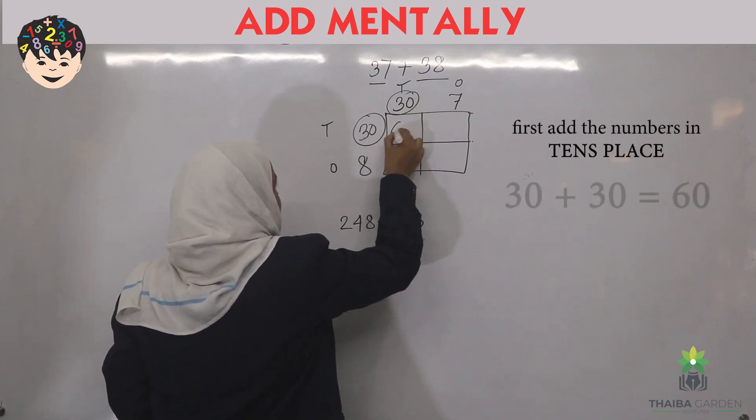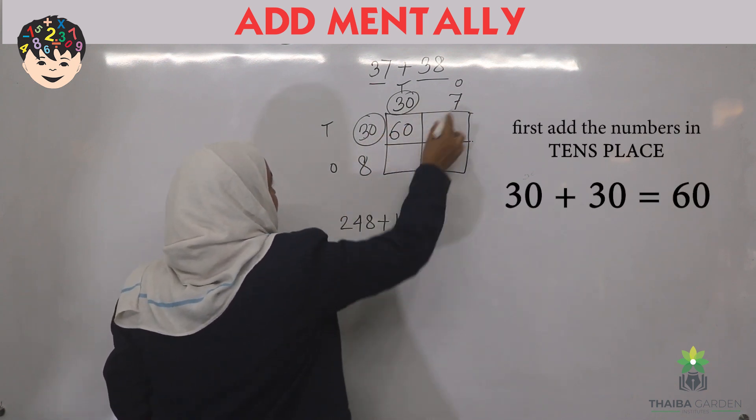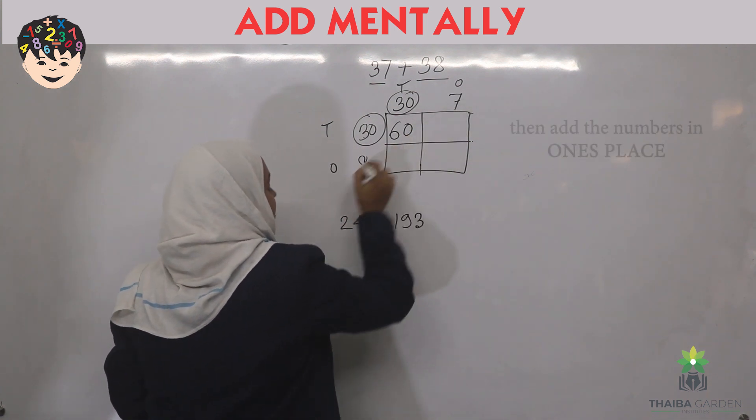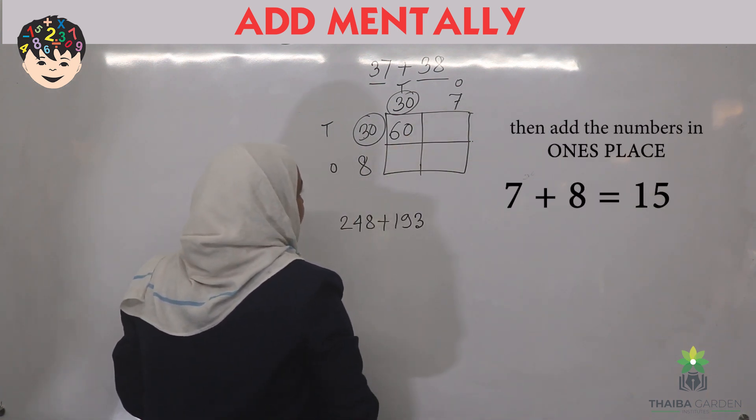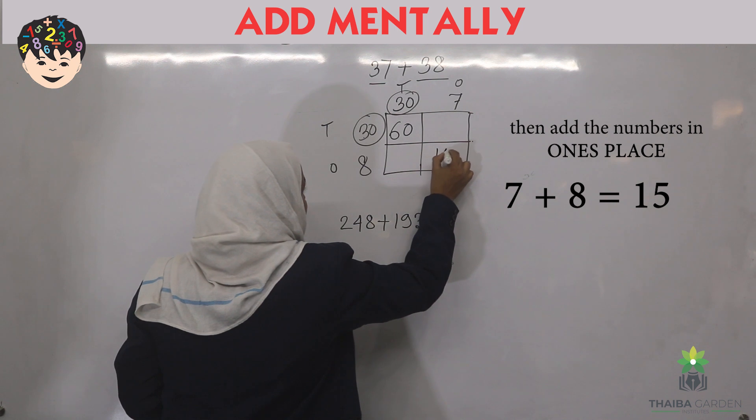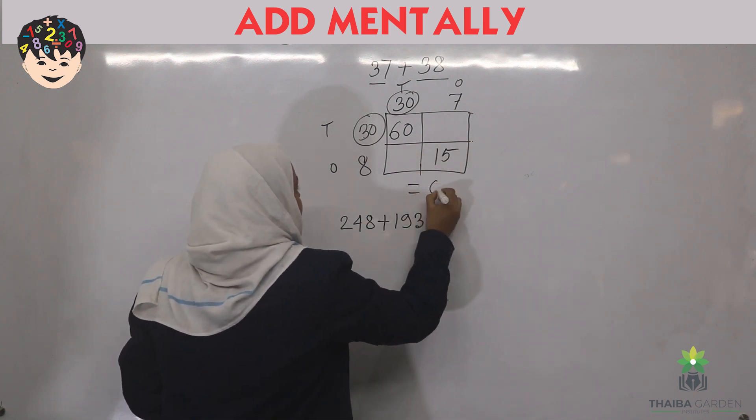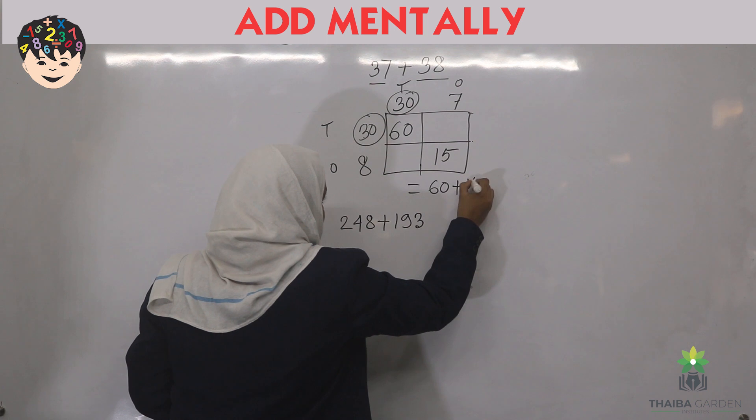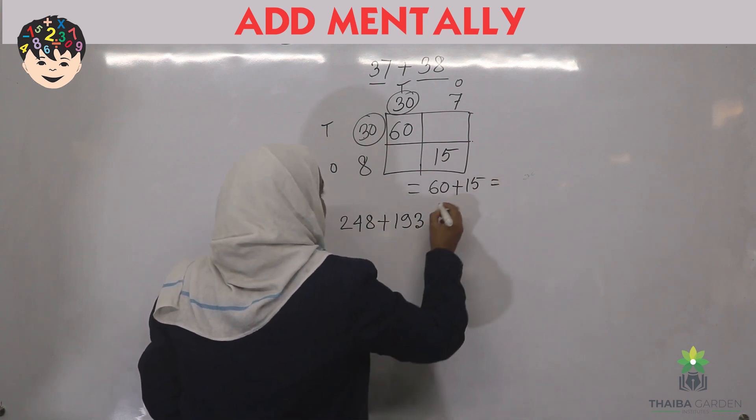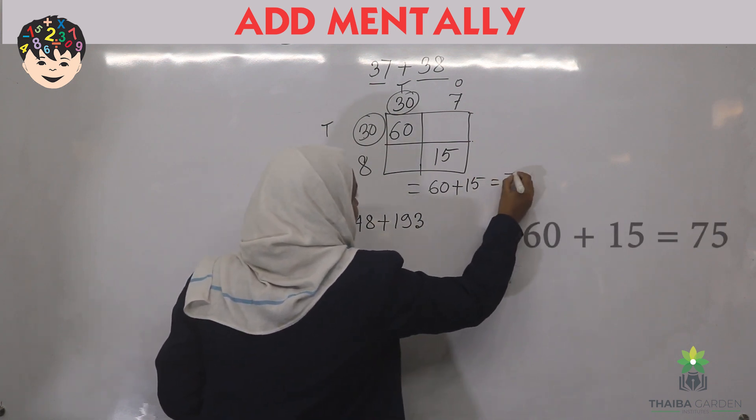So 30 and 30 is 60, and here 7 and 8 both are in one's place. So 7 and 8 is 15. Then you can write it or you can think it like this, that 60 and 15 is 75.